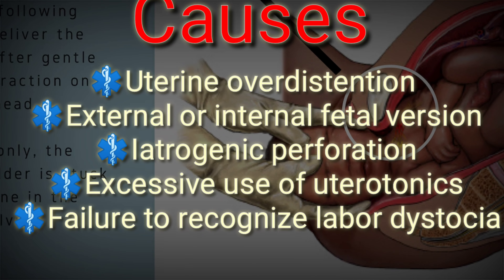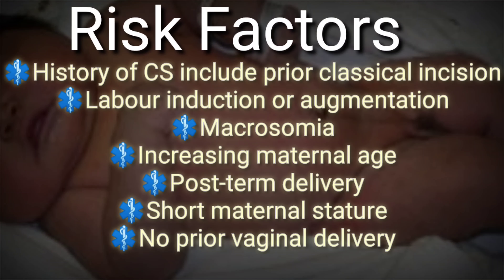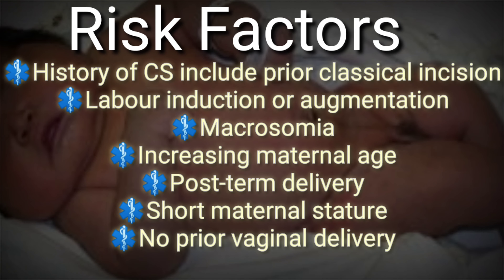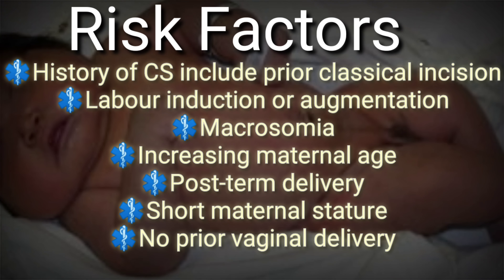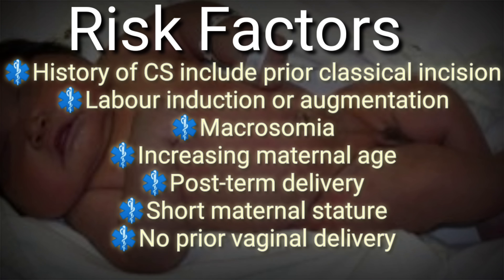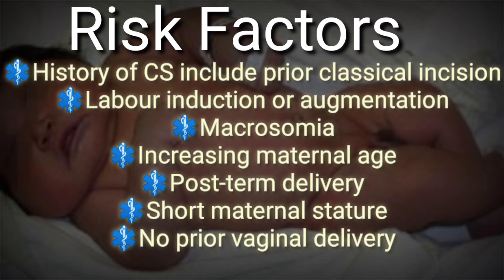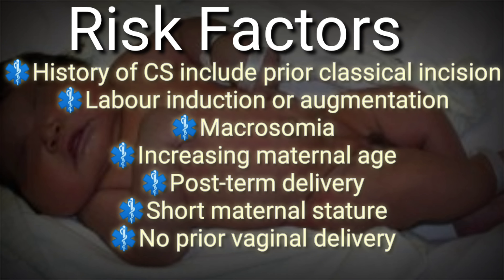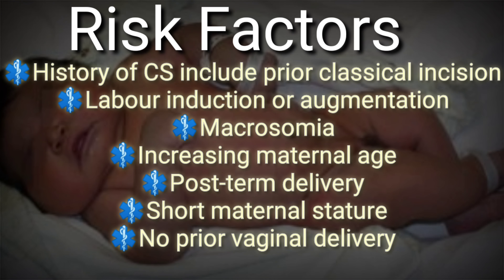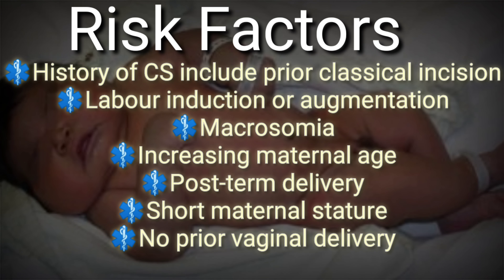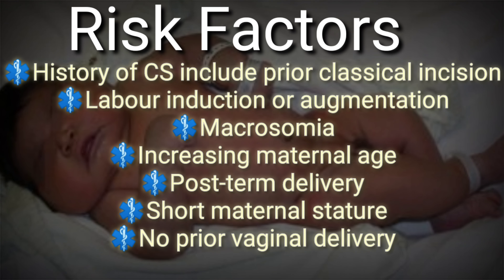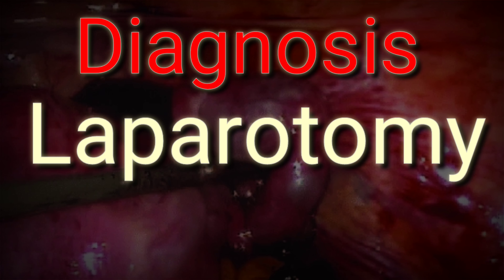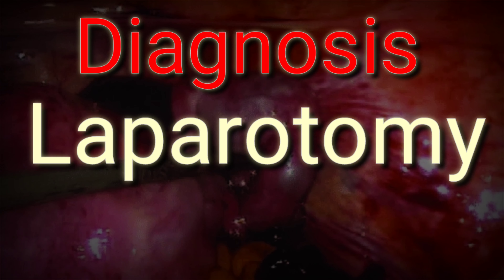Who is at risk for uterine rupture? Risk factors include: history of cesarean section with any prior classical incision, labor induction or augmentation, macrosomia, increasing maternal age, post-term delivery, short maternal stature, no prior vaginal delivery, and prior periviable delivery.